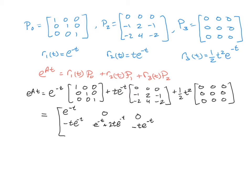For the bottom row, we pick up a 0 from the first, a negative 2T E to the negative T from the second, and nothing from the third. In the middle entry, we have 0 from the first, 4T E to the negative T in the middle, and 0 from the last. Finally, for the last entry, we pick up one of the E to the negative T's, then a minus 2T E to the negative T from the middle, and nothing from the last. So that right there is our matrix exponential.